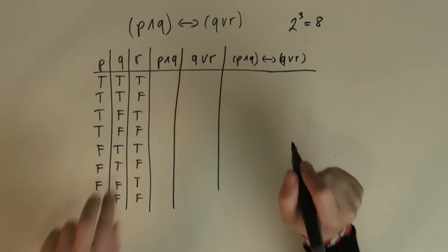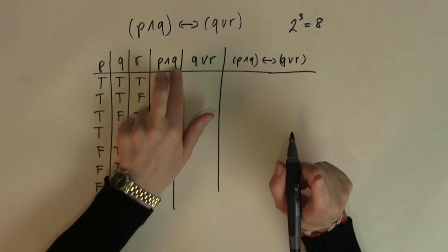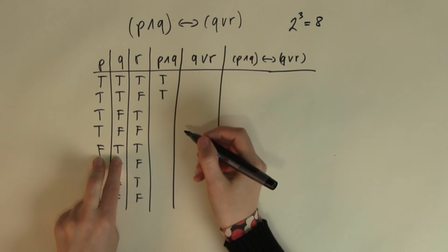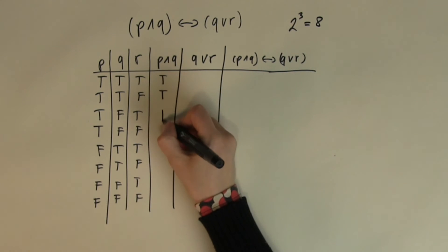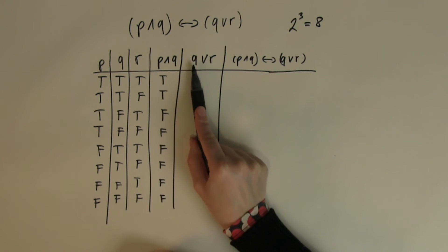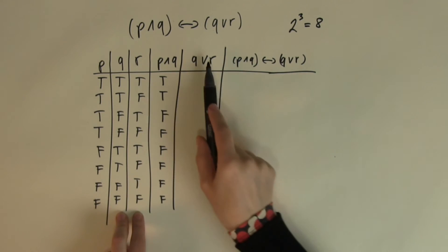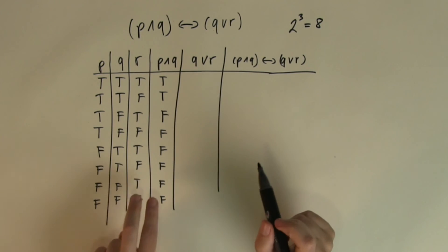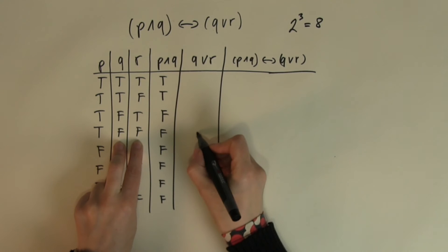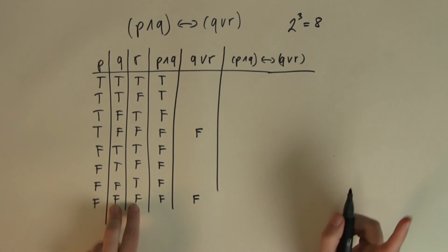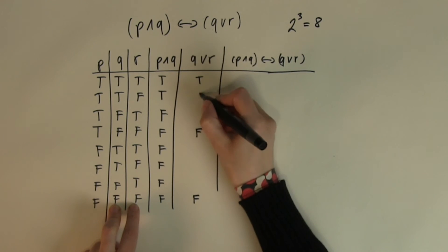So let's get started. p∧q: AND only returns true if both of them are true. So the first two rows where both p and q are true give true, true; the rest are different combinations and give false. For q∨r: the OR is going to return false only if both input values are false. Looking for those: here is one where both are false, so OR returns false, and here is another one — OR returns false in these two cases. Everywhere else, because at least one input is true, OR returns a true value.